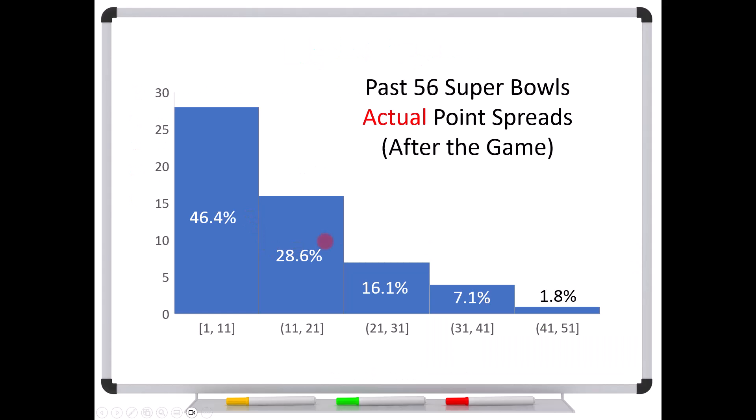Football games exhibit what we would call light tails. So for instance, here's a chart of the past 56 Super Bowls. Now these are the actual point spreads. And you can see one to 11 point spreads, or about 46% of the time, 11 to 21, about 28, 29% of the time, and so on. So can we get a 41 to 51 point spread? Yeah, but only about 2% of the time. But still, relatively speaking, anywhere from 1 to 50 is still a fairly narrow range of potential numbers.